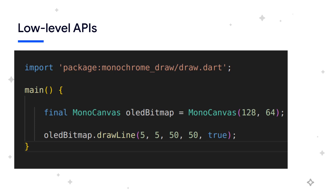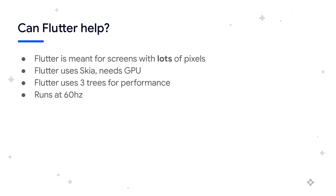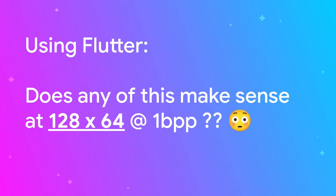Even using the monochrome_draw package gives us a very low-level drawing API, and is not the kind of thing we're used to as Flutter developers. So can Flutter help us here? We need to first remember that Flutter is meant for high-resolution screens driven by GPUs, which Skia — the graphics library used in Flutter — expects to be available. Flutter uses three trees to optimize for performance in order to run smoothly at 60 frames per second. Does any of this make sense for our tiny 128 by 64 monochrome screen? No, it doesn't, and it's no surprise that Flutter does not work on tiny screens such as these.